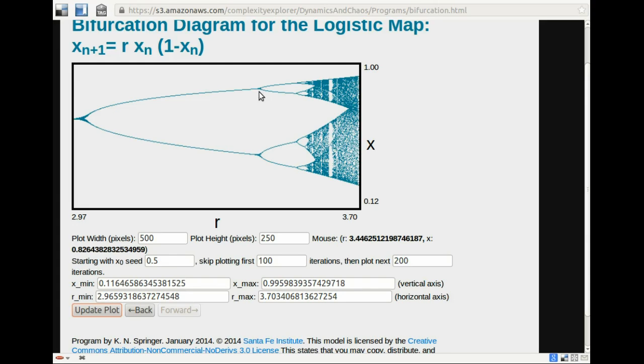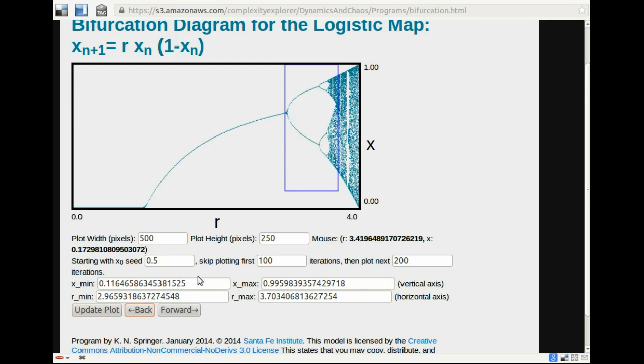The last question, question 3, asked about what's going on around 3.906. There's a periodic window of what period? So let me go back one. And this will take a little bit of trial and error exploration.